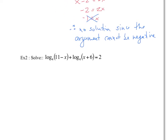Now a different type of equation. We have log base 4 of one expression plus log base 4 of another equals 2. Notice this term does not have a log in it. Let's simplify the left hand side using our properties of logarithms. There's an addition, so we can multiply the arguments. What we get is log base 4 of (11 minus x)(x plus 6) equals 2.